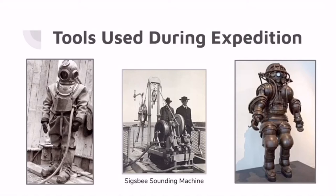In 1837, Augustus Siebe, a German-born inventor, created a watertight rubber suit that was connected to an air pump on the surface.